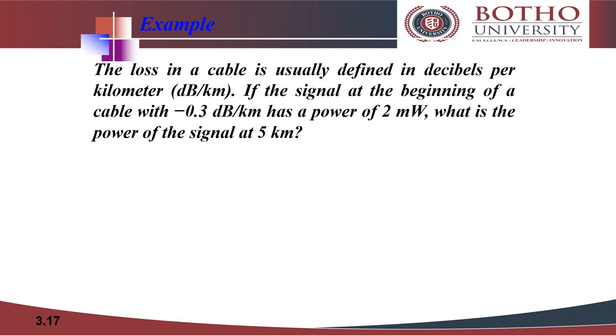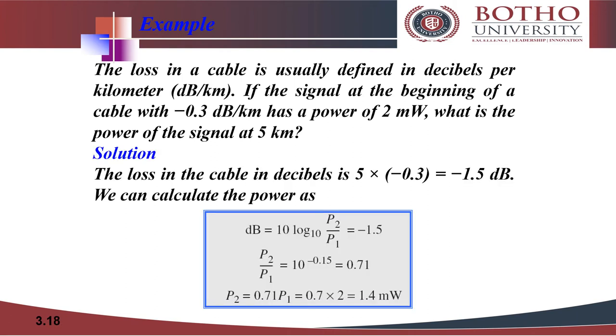Let us discuss another example. In this case, the loss in a cable is usually defined in decibels per kilometer. If the signal at the beginning of a cable with negative 0.3 decibels per kilometer has a power of 2 milliwatts, what is the power of the signal at 5 kilometers? Since we know the loss in the cable is negative 1.5 decibels and the distance is given as 5 kilometers, the calculation is P2 over P1 equals 10 raised to the power minus 0.15 equals 0.71. So finally, after all the cancellations and divisions, we get a value of 1.4 milliwatts.